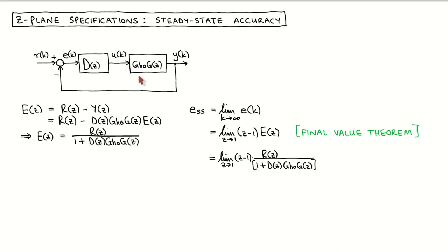After we have discretized a plant, the control system is now described as a purely discrete time system. The controller we need to design is given by D, the plant output is Y, the plant input is U, the reference signal is R, and the error signal is E. We want the output to follow the reference input, which means that we want the error signal to be small. In this video, we express the steady-state value of the error signal in terms of the plant transfer function, the controller transfer function, and the input signal. We then use this at a later stage to design the controller.